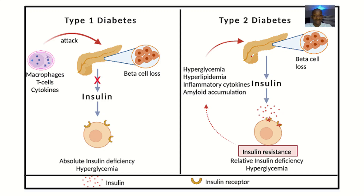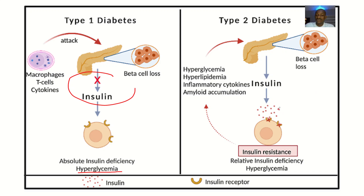For diabetes mellitus type 1, the problem is that insulin is not being produced, which results in hyperglycemia. For diabetes mellitus type 2, insulin is being produced, but perhaps only in small amounts, and the cells are resisting the insulin action. So there is relative insulin deficiency and the cells are also resisting.